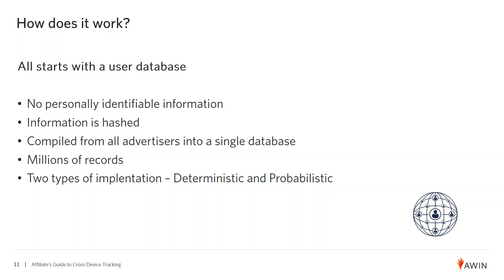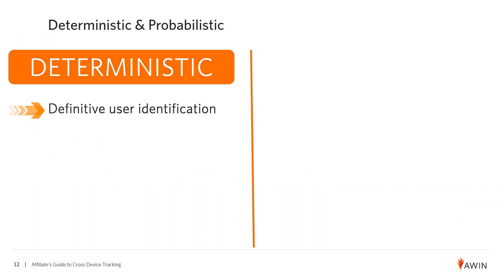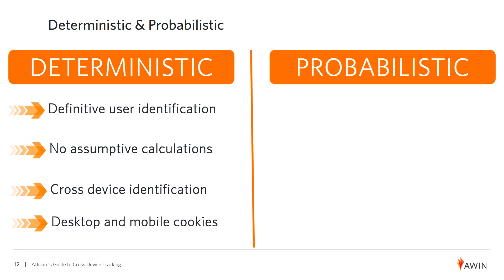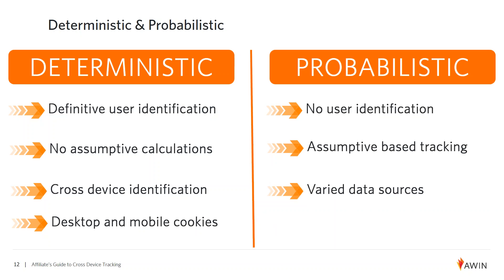There are two types of implementation: deterministic and probabilistic. Deterministic means it uses definitive user identification with no assumptive calculations, by building a profile for each user including the multiple devices they use, both desktop and mobile — with no personally identifiable information included. Probabilistic means assumptions are based on tracking with no user identification, using a variety of data sources, such as the same device originating from the same IP address over a designated period of time — like the same iPhone from the same IP address must mean the same user.